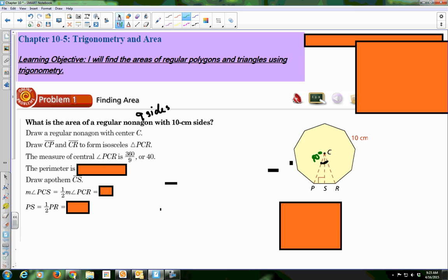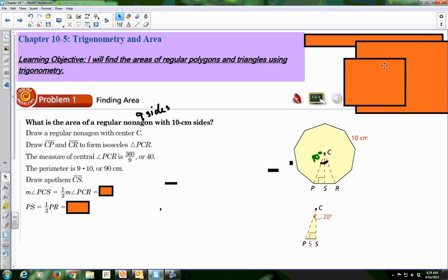So now the perimeter all the way around the nonagon is 9 times 10 because I have 9 sides and each one is 10 centimeters. And that is equal to 90 centimeters. Make sure you have your apothem, this point from your center to the middle of your side. It's also perpendicular. And we're going to find the angle of PCS. When you take half of your central angle, you get 20.